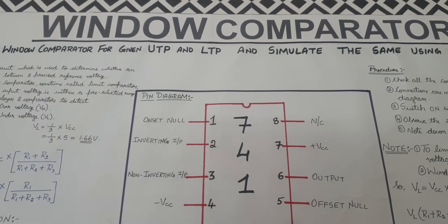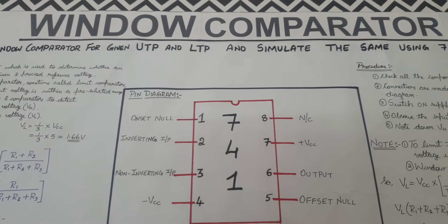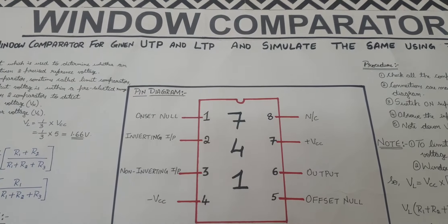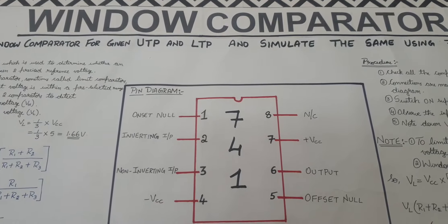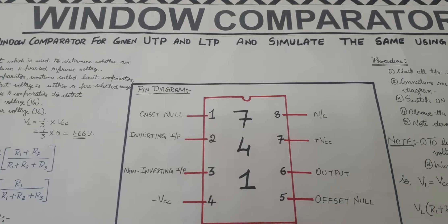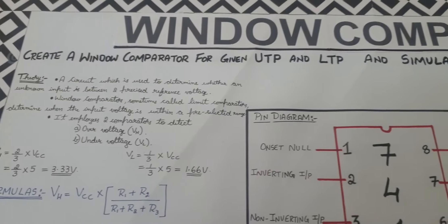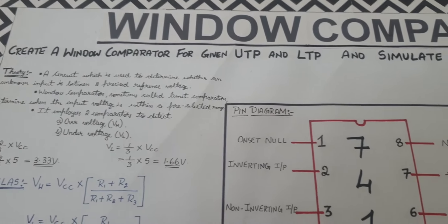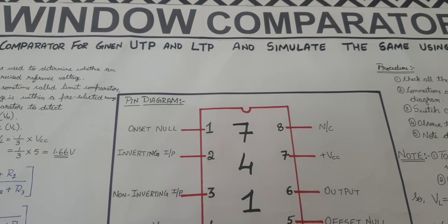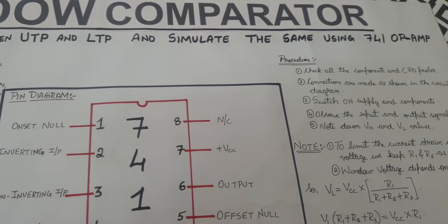Hello all. In this particular video we will be learning about the concept of window comparator. Window comparator is your third experiment in your part A; it is an analog experiment. The question will be: create a window comparator for the given UTP and LTP and simulate the same using the 741 op amp.